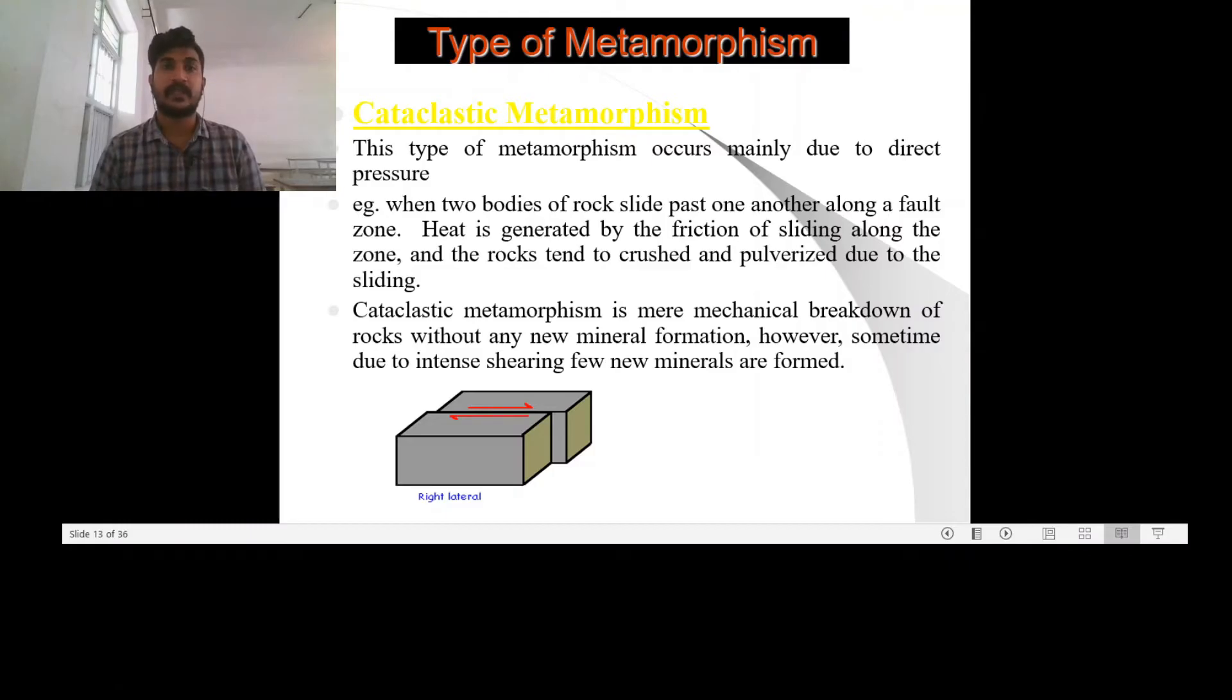The next type of metamorphism is cataclastic metamorphism. It is also known as dynamic metamorphism. It is a metamorphism which is formed as a result of faulting or thrusting.